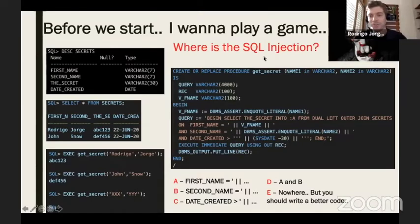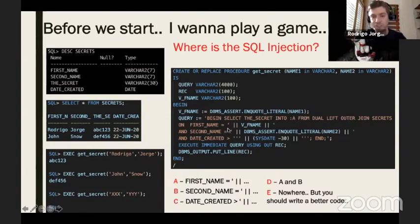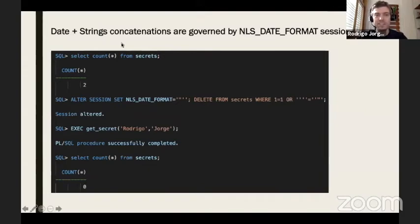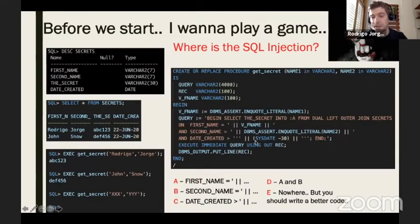Now I'll give the answer. We have some entries here — the first name is protected from SQL injection using DBMS_ASSERT.ENQUOTE_LITERAL, and the second name is also protected with DBMS_ASSERT.ENQUOTE_LITERAL. The answer is letter C: date_created greater than SYSDATE minus 30. When you use date-plus-string concatenation, NLS_DATE_FORMAT is used for the transformation, and you can use SQL injection via ALTER SESSION SET NLS_DATE_FORMAT.